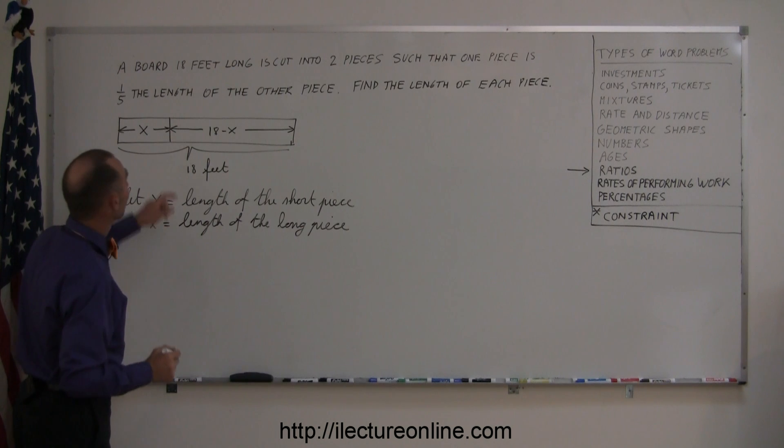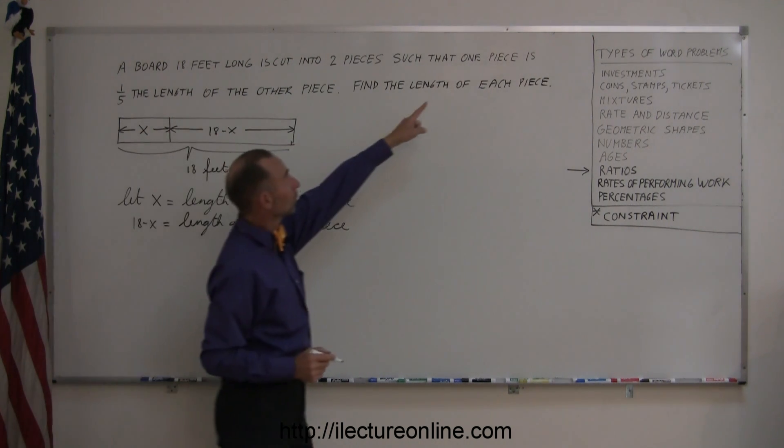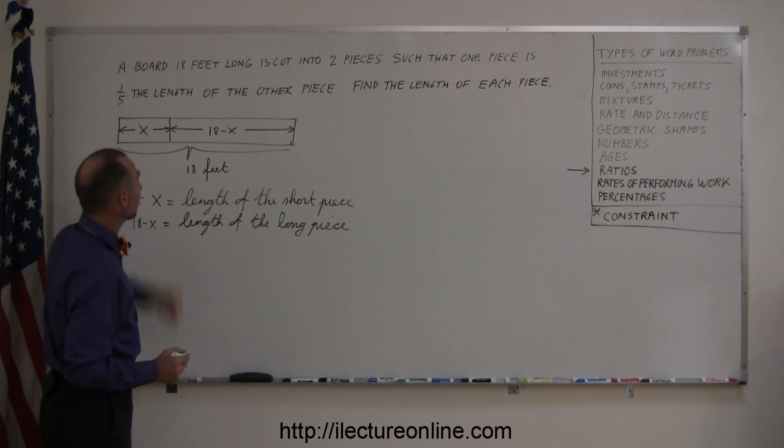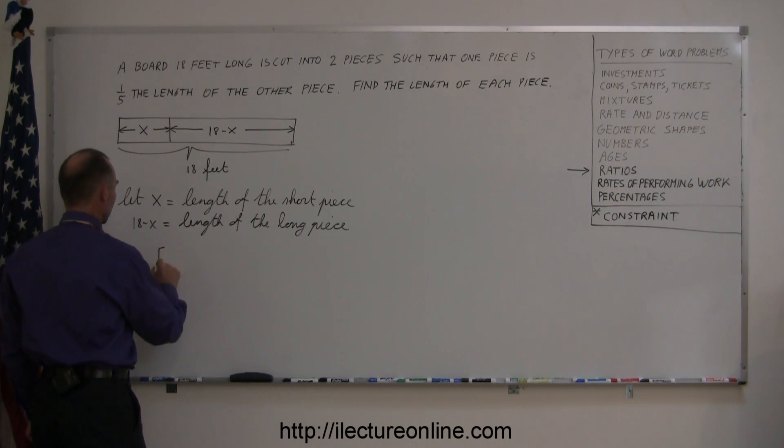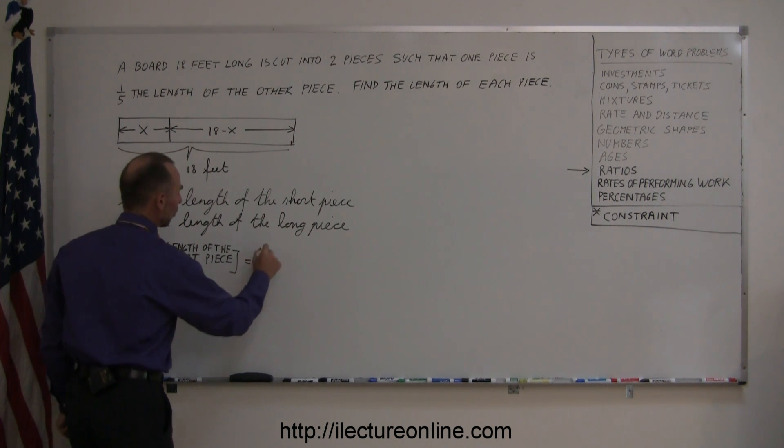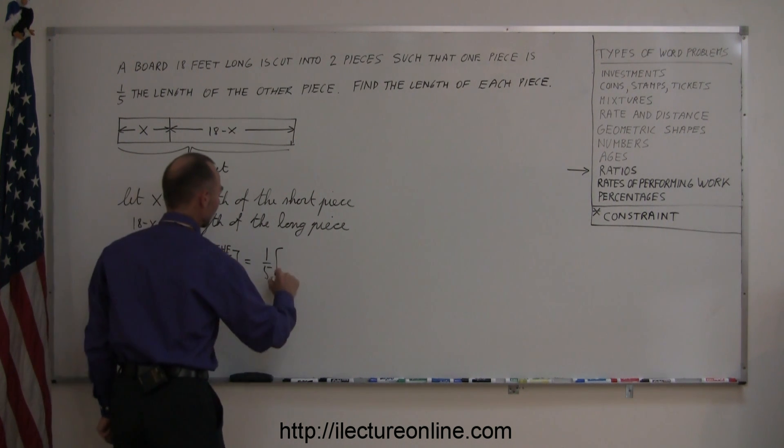And then, 18 minus x is equal to the length of the long piece. And now they tell us that one piece, the short piece in this case, is one-fifth the length of the long piece. So the length of the short piece is equal to one-fifth the length of the long piece.